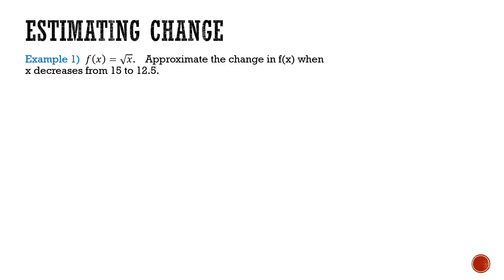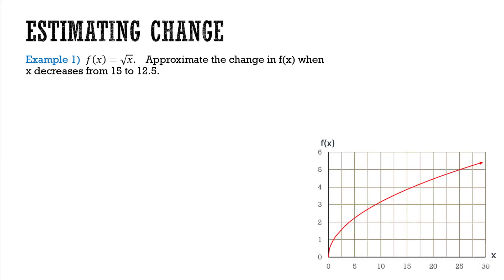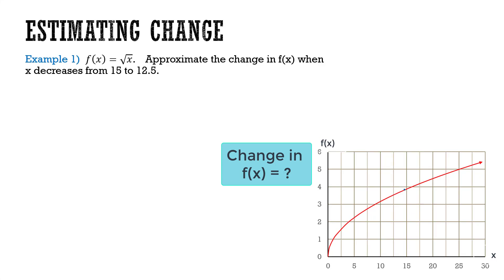Here we have f(x) equal to the square root of x. What we want to do is approximate the change in f(x) when x decreases from 15 to 12.5. We have our function f(x) as the square root of x, and what we're looking to do is estimate the change in our vertical axis when we go from 15 to 12.5. What is that change in f(x)?